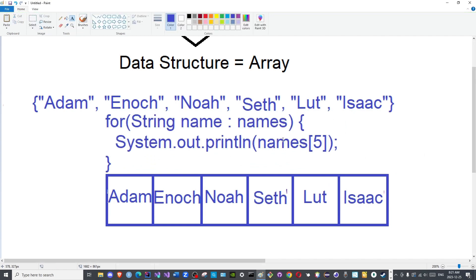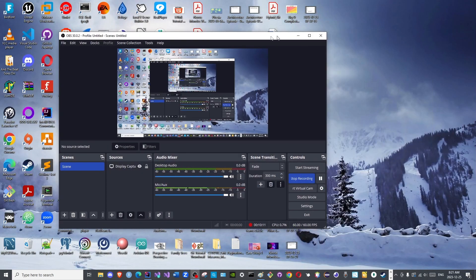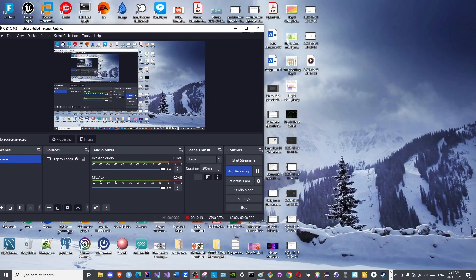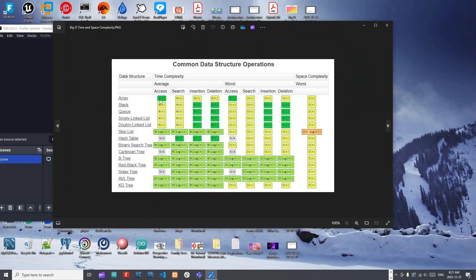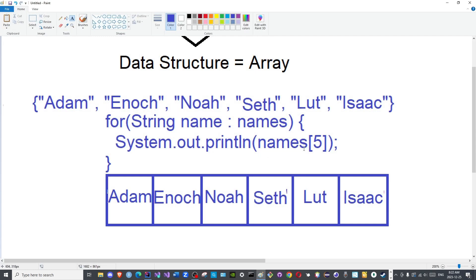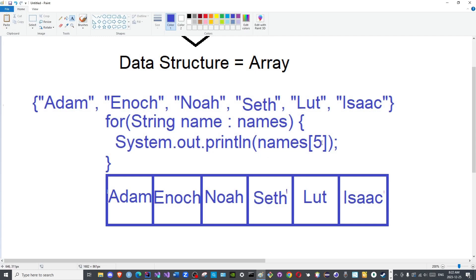What is the big O notation for this iteration? Well, I have the cheat sheet here. Here, to access it, you have O of 1. Why O of 1? Because I am offering the index. 0, 1, 2, 3, 4, 5. The array will be able to access it immediately.